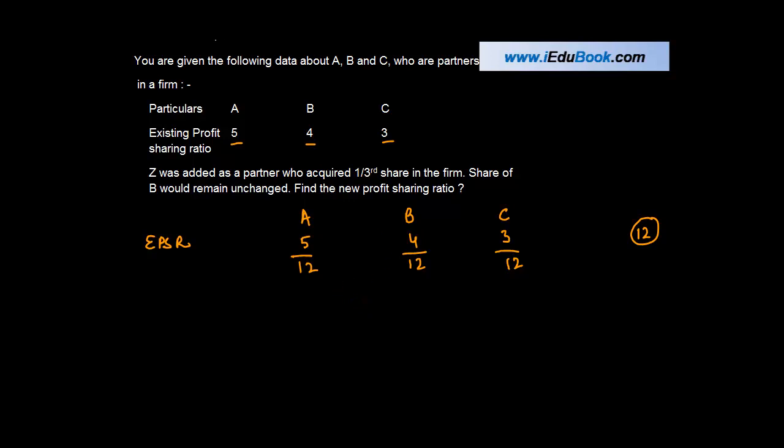Now you are told that there's a new gentleman who comes in, and we are supposed to find the new profit-sharing ratio. This is not D, it's Z. Z was added as a partner who acquired one-third share in the firm.